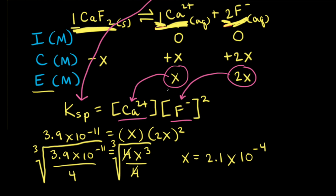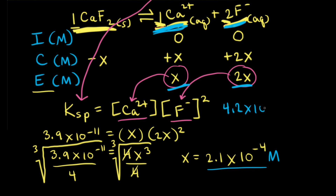Looking at our ICE table, X represents the equilibrium concentration of calcium 2+ ions. So 2.1 times 10 to the negative 4th molar is the equilibrium concentration of calcium 2+ ions. For the fluoride anions, the equilibrium concentration is 2X, so 2 times 2.1 times 10 to the negative 4th gives 4.2 times 10 to the negative 4th molar.